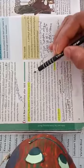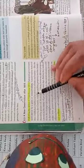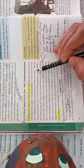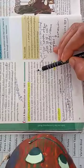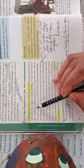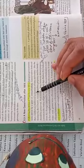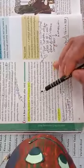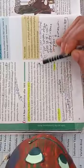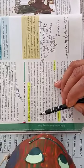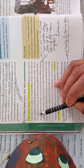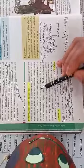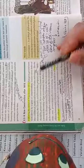Conservatives believed that established traditional institutions of state and society - yeh jo roodhi vaadi log the, in ka vishwas tha that established, asthapit ho chuke hain, traditional paramparik institutions, sansthaayen of state and society, raj ki aur samaj ki - like the monarchy, the church, social hierarchies, property and the family. Jaise ki monarchy - when a king rules his kingdom single-handedly.